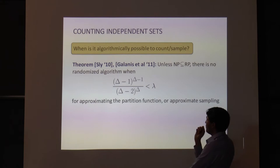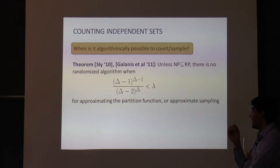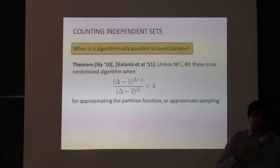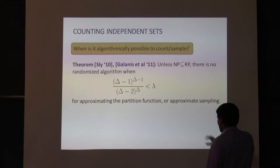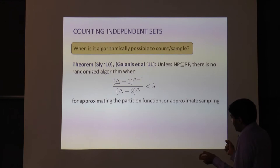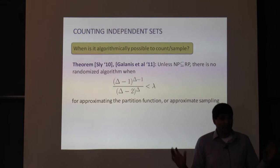What's amazing is that this function of delta is tight. A beautiful breakthrough result of Alan Sly showed that for any lambda strictly larger than that function of delta, approximating the partition function to any multiplicative factor becomes NP-hard. And if you could approximately sample in those situations, you'd have NP contained in RP. Sly's work had some restrictions, and a later paper by Galanis et al. extended it to a broader range of settings. This is a wonderfully tight threshold.